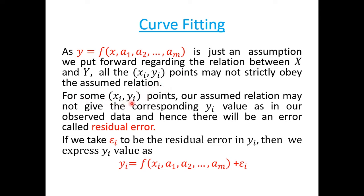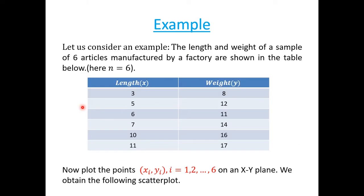For some (xi, yi) points, our assumed relation may not give the corresponding yi value as in our observed data. So there will be an error, which is called the residual error. If we take epsilon_i to be the residual error in yi, then we express yi as: yi = f(xi; a1, a2, ..., am) + epsilon_i. Let us illustrate this with an example.